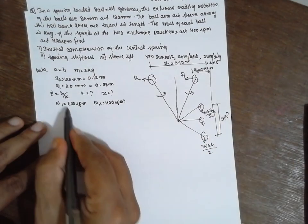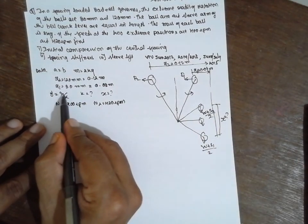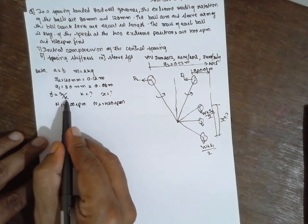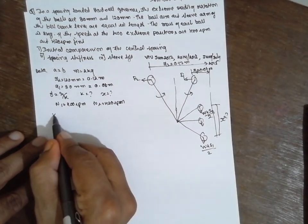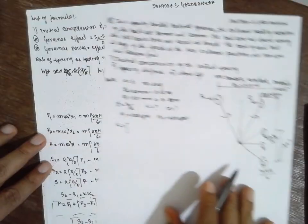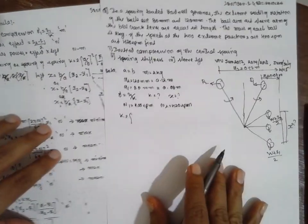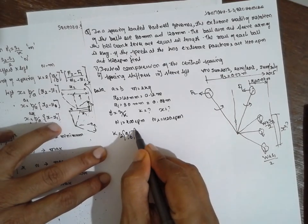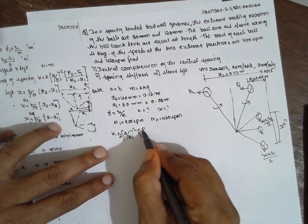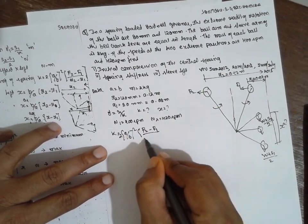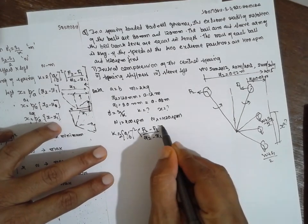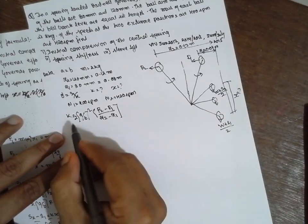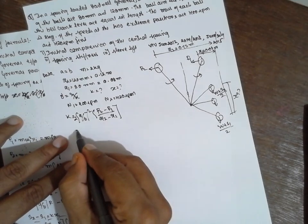Now first I will find out the S1. Before that one I have to find out K. Stiffness K is equal to, what is the formula? K is equal to 2 A by B whole square. It is two extreme, therefore F2 minus F1 divided by R2 minus R1. Substitute the values here.